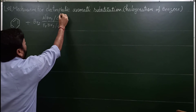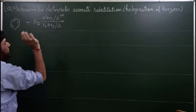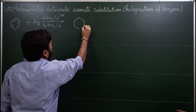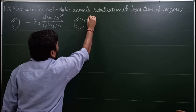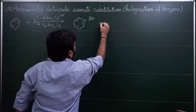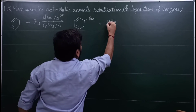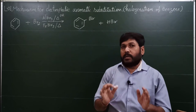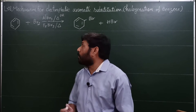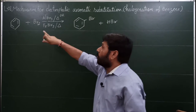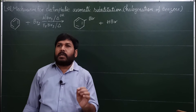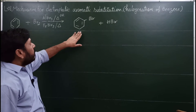अब देखते हैं product क्या बनेगा। यहाँ पर benzene की ring बनाते हैं, H replace होकर BR जुड़ जाएगा — H निकल जाएगा, side में HBr निकलेगा। यह है simple electrophilic substitution aromatic reaction of benzene। Direct question आता है — bromination of benzene कराइए — तो bromobenzene बना देना है। यह simple और convenient reaction है — 12th class, 11th class, या कोई simple competition में आए तो इससे solve कर देंगे।